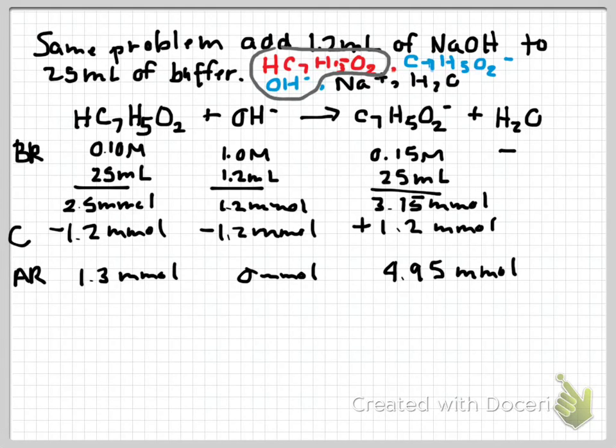We can look at our change. Again, in this particular case, the hydroxide is now going to be my limiting reactant, so -1.2 millimole. And then my after reaction is going to give me 1.3 millimole, 0 millimole of my hydroxide, and 4.95 millimole of my benzoate. Convert back to molarity with the total volume. And I find that I get a 0.0496 M solution of my acid and a 0.189 M solution of my base.